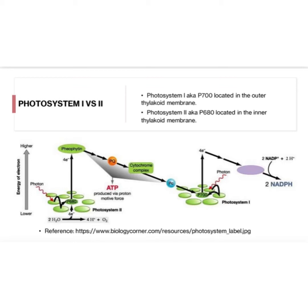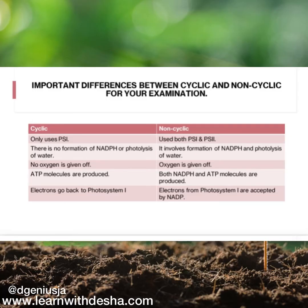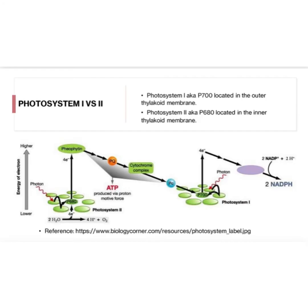It is important to familiarize yourself with the differences between cyclic and non-cyclic photophosphorylation for your examination — these are summarized in a table. From the light-dependent reactions we made two important molecules: ATP and NADPH. We're going to need ATP's energy and NADPH's reducing power to fix carbon dioxide into sugars.